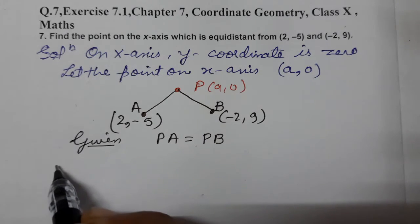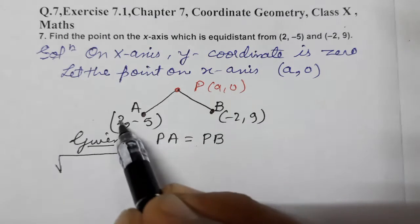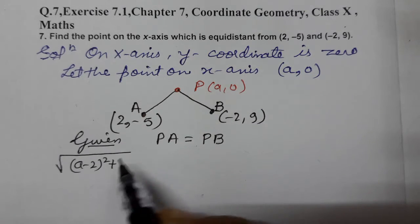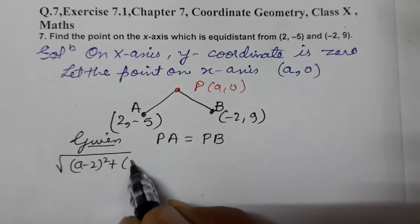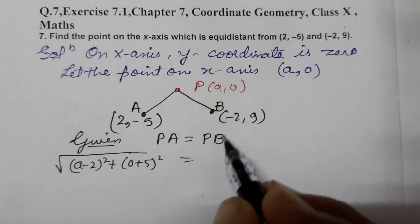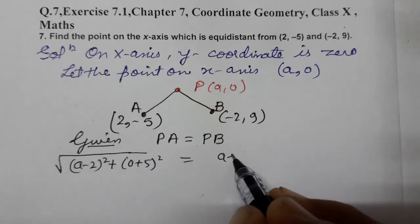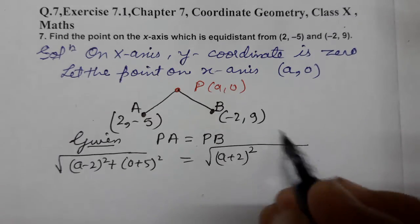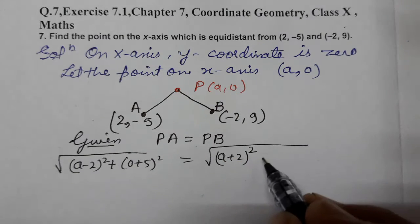Applying the distance formula: PA = √[(a − 2)² + (0 − (−5))²] = √[(a − 2)² + (0 + 5)²]. And PB = √[(a + 2)² + (0 − 9)²].